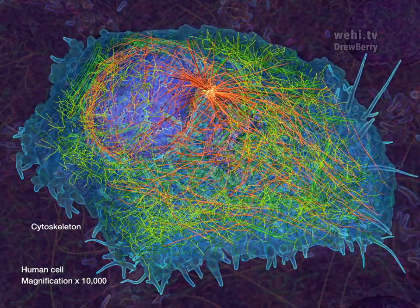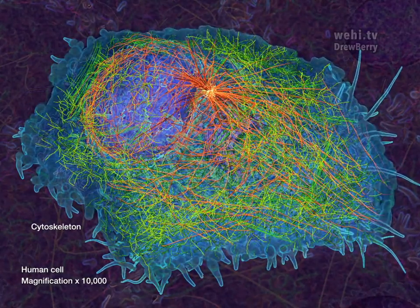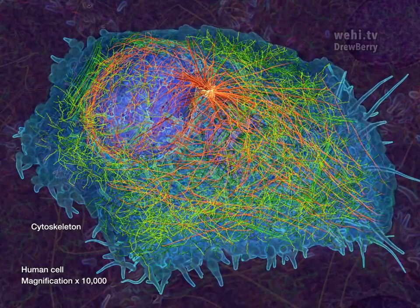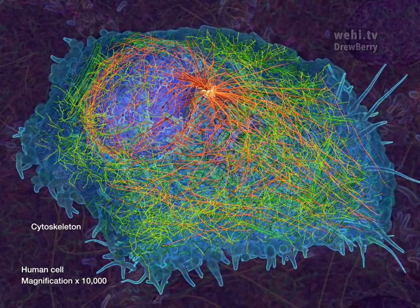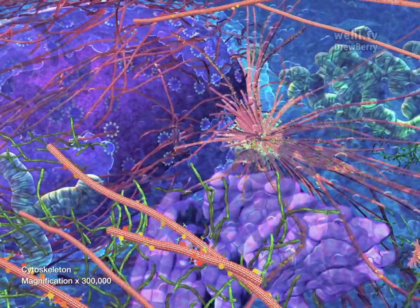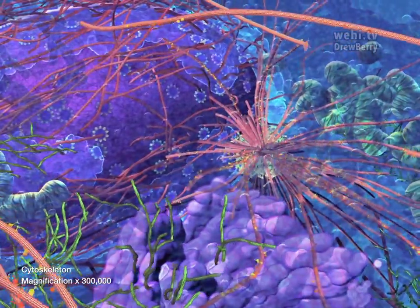The cytoskeleton is a dynamic network of filamentous proteins that extends throughout the cytoplasm, forming the struts, cables, and girders that give the cell its shape, internal organization, and mechanical support for movement.